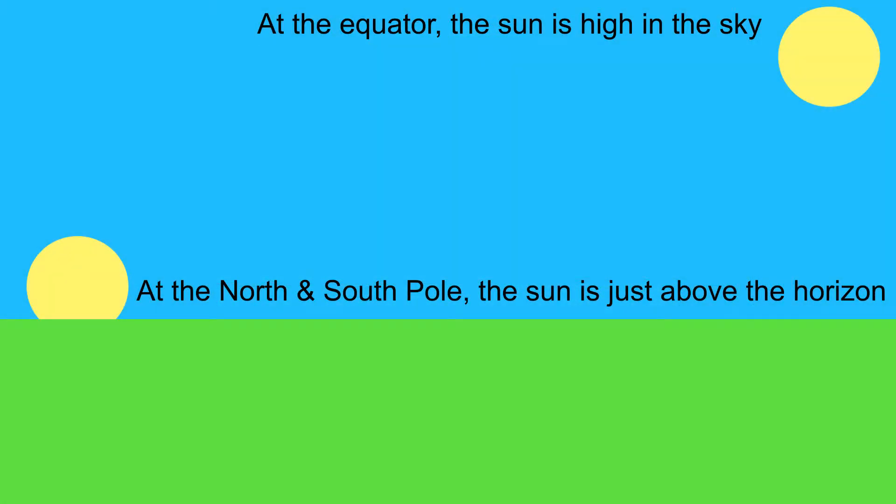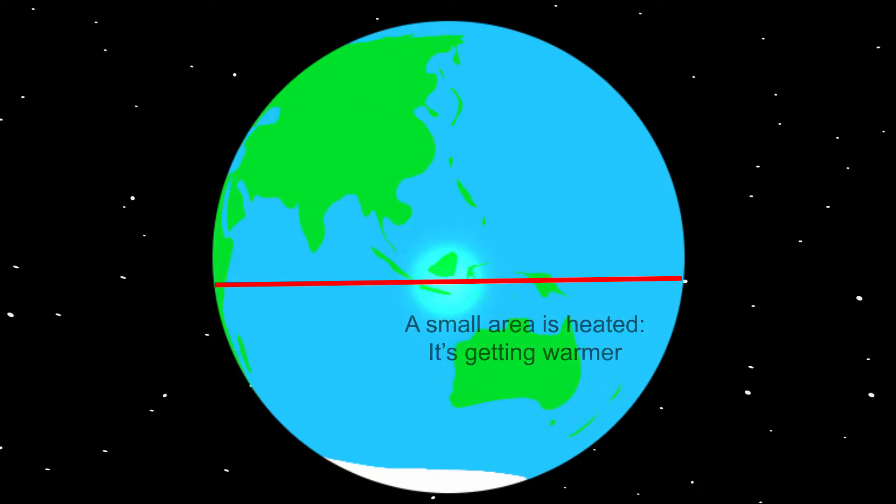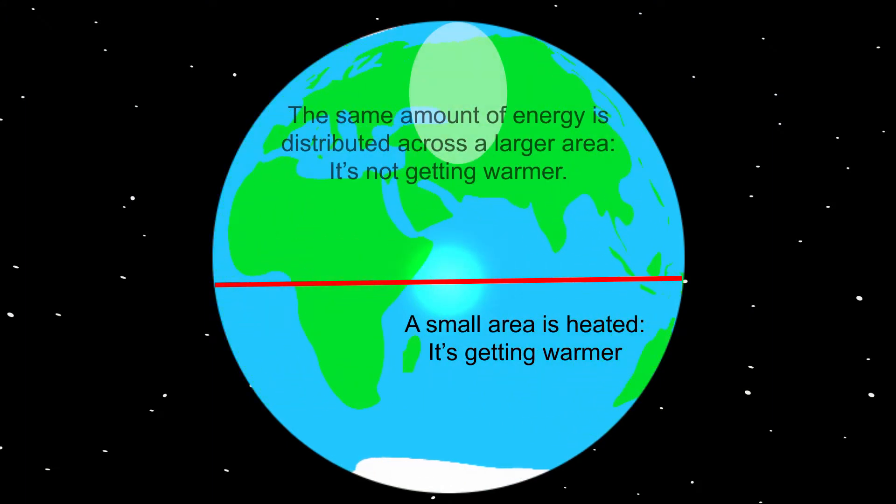For example, when you are on the North or South Pole, you will experience the Sun just above the horizon in the summer. Because the Sun is low on the horizon, the energy needs to be distributed on a large surface area. Because of this, both the poles are not well warmed.